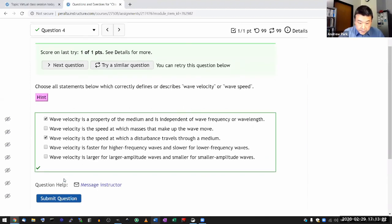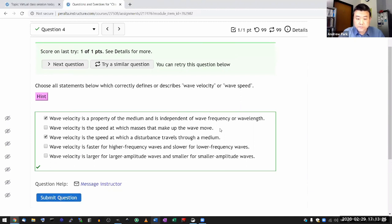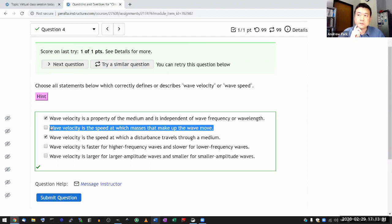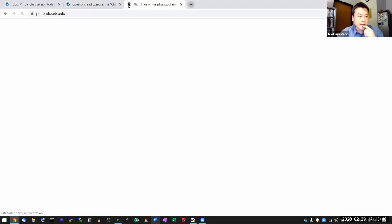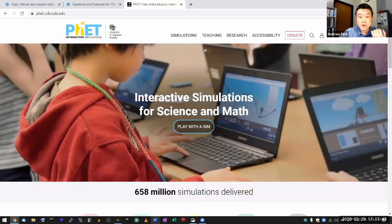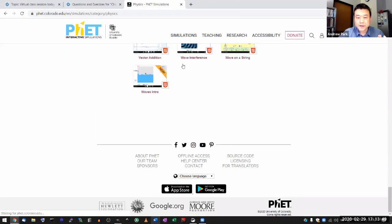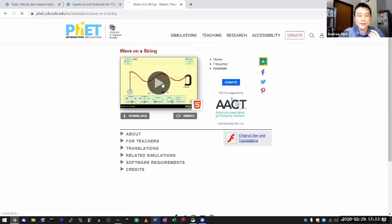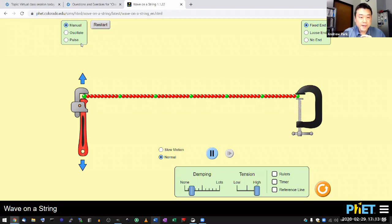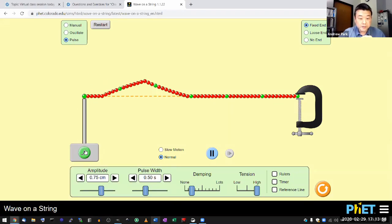So let me submit here. And yeah, I guess the speed at which masses that make up the wave move, I guess that's the one that could be potentially confusing or unclear what those particular arrangements of words mean. I think one thing I can show you is with a simulation. You have seen this in one of the recorded videos. This is one of my favorite simulations. You've seen me use this in a recorded video. And let me just use the pulse one here.